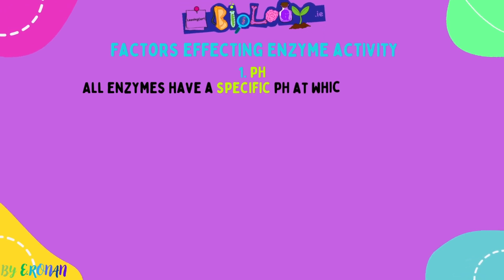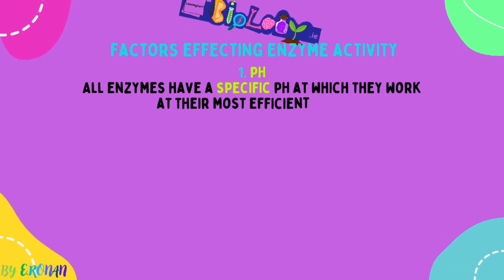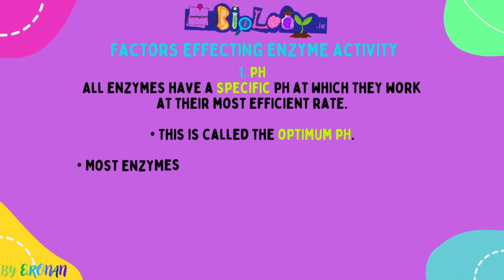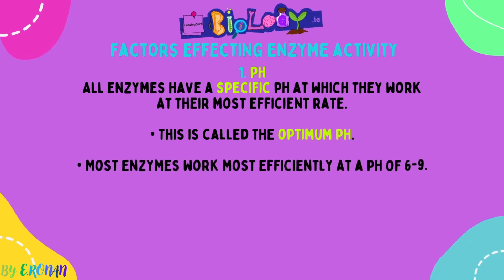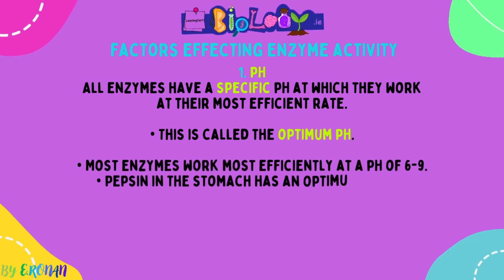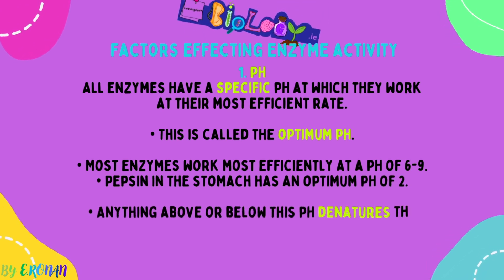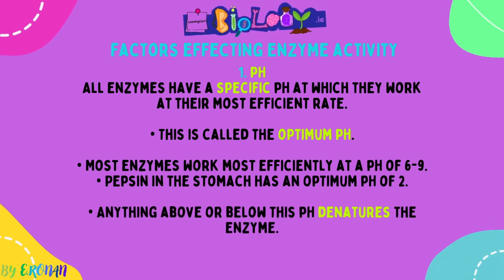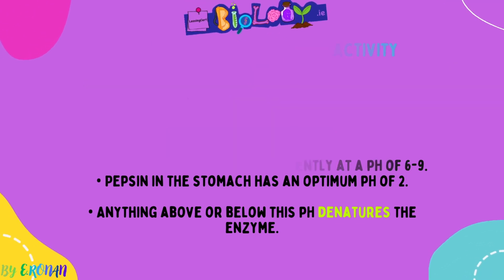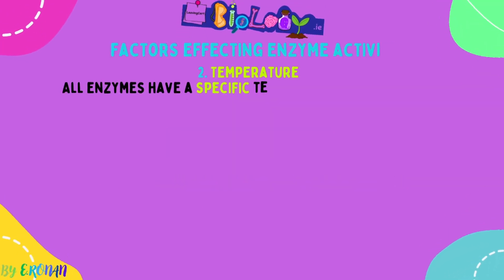Factors affecting enzyme activity — these are your two mandatory experiments out of the four for enzymes. First, pH: all enzymes have a specific pH at which they work optimally, called their optimum pH. They work most efficiently at this pH. Different enzymes in different parts of the body have different optimum pHs. For example, pepsin in the stomach has an optimum pH of 2, and amylase in the mouth has an optimum pH of between 7 and 8.